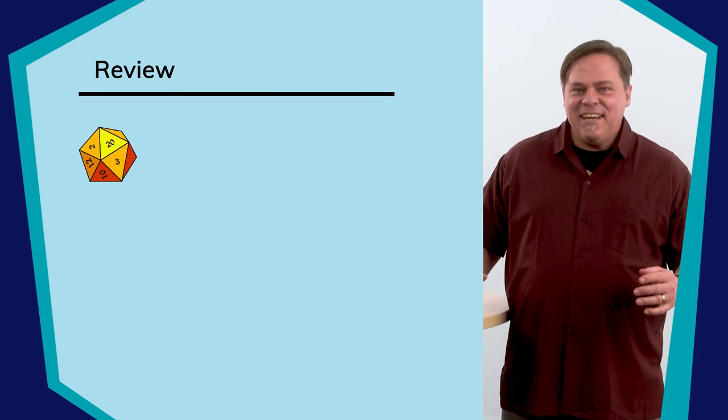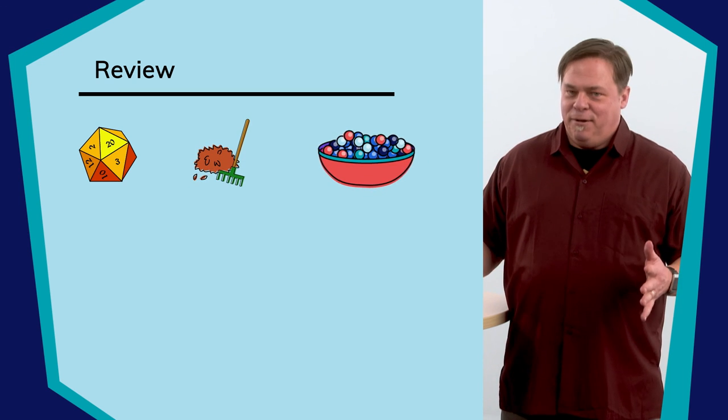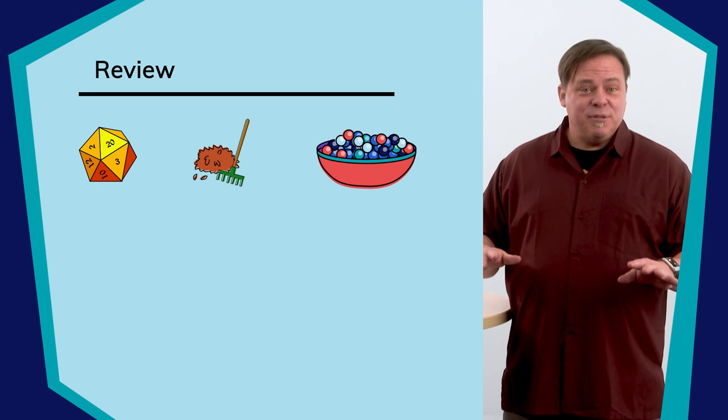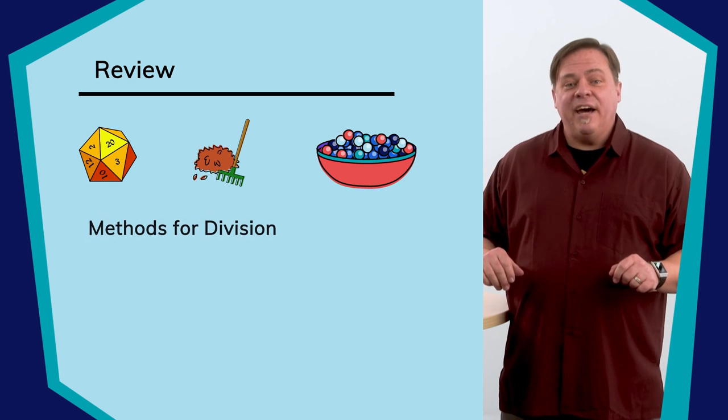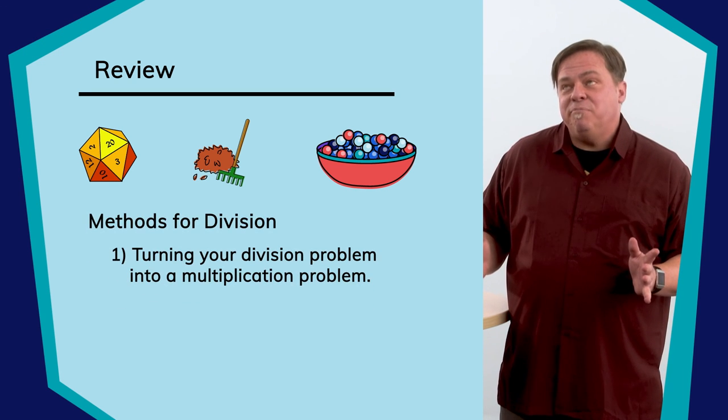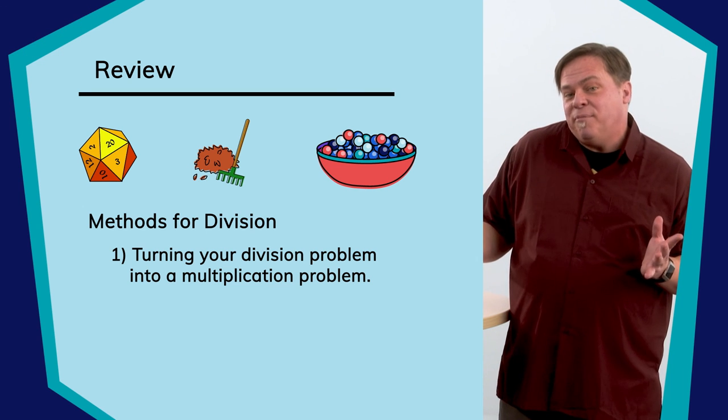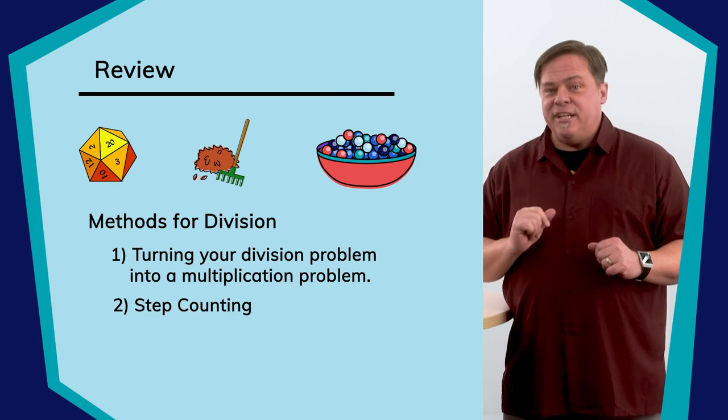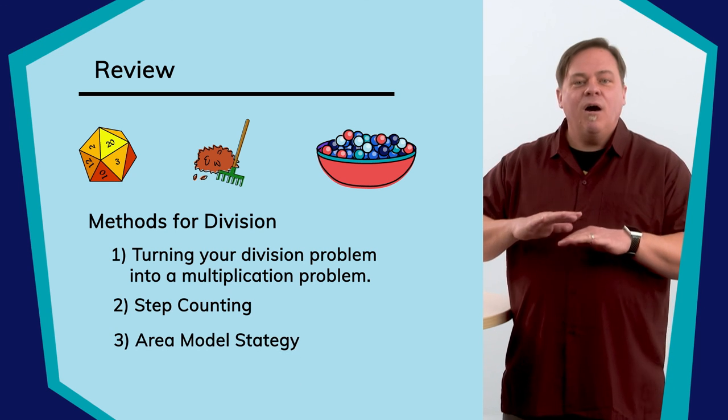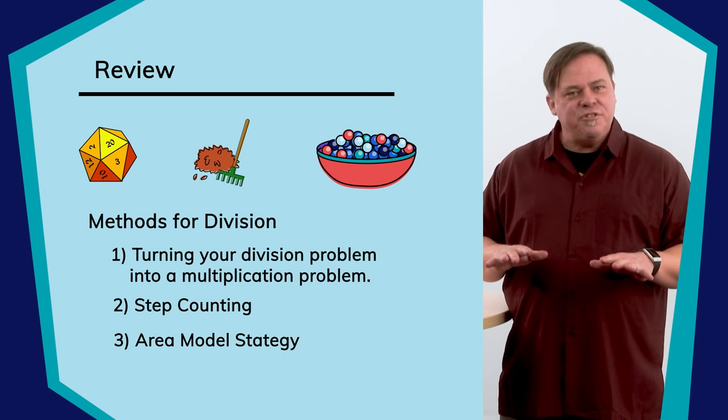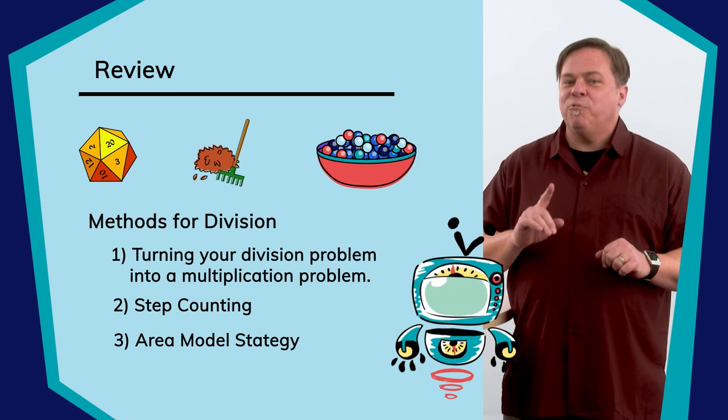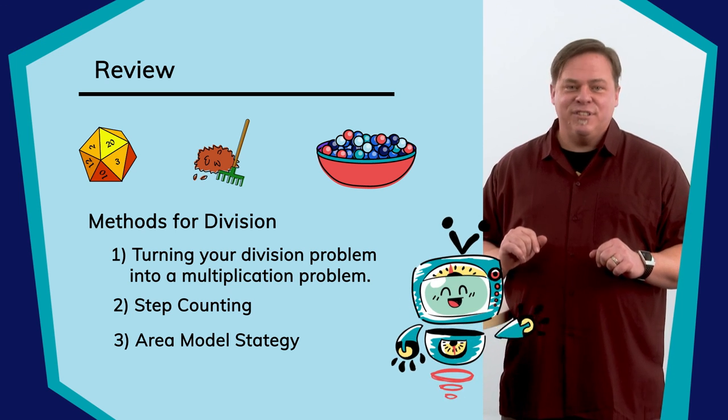Today, we learned some valuable lessons about dice, leaf raking money, and gumballs. It's all about the division. There are some simple methods you can try, like turning your division problem into a multiplication problem or step counting. Another strategy to try is the area model. All of those strategies will get you to the correct answer. So, it's up to you to pick the right one that works for you and for your situation.